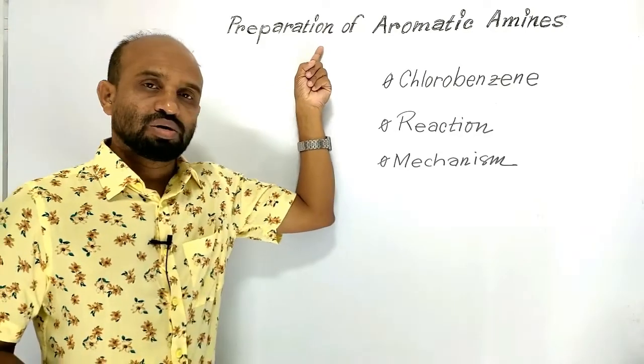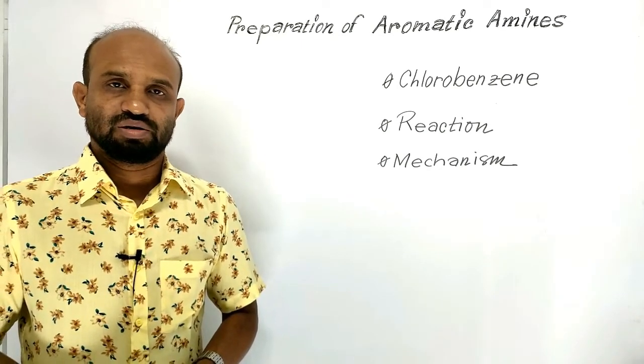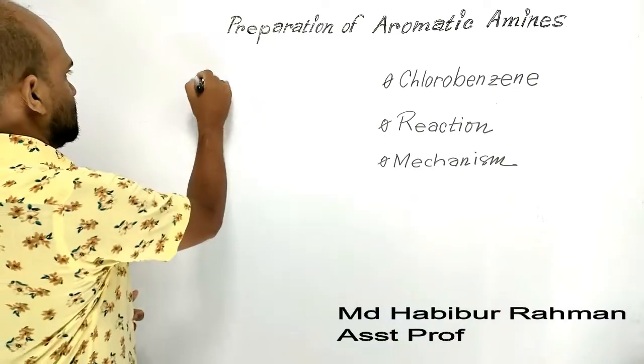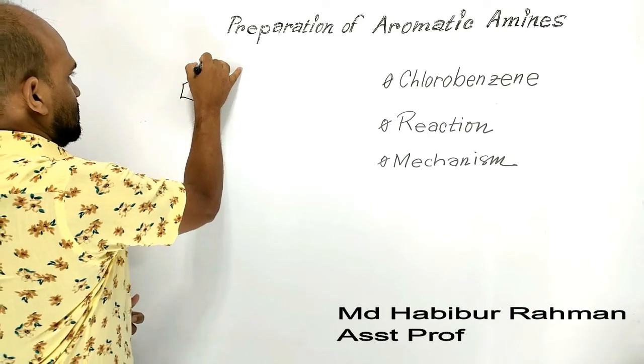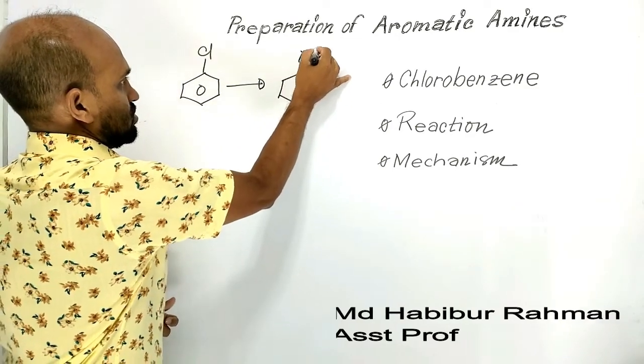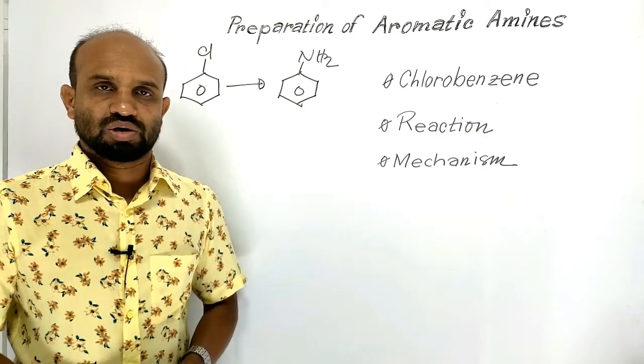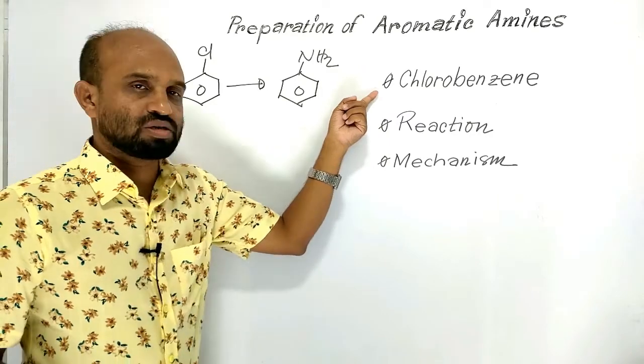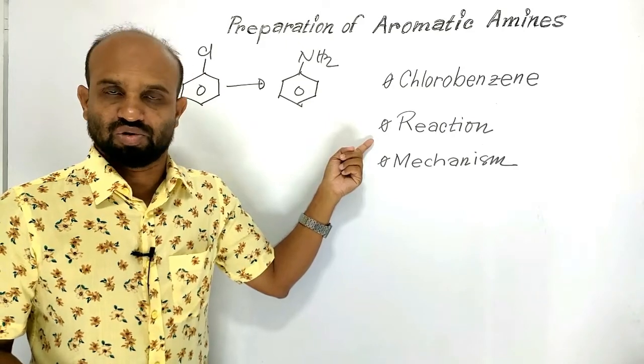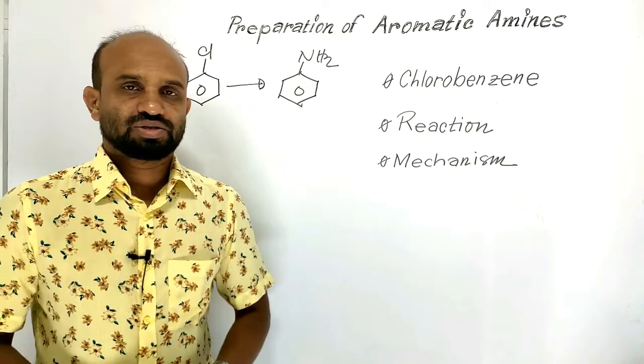The general method of preparation of aromatic amines. In this lesson, aromatic amine, that means aniline, will be prepared from chlorobenzene. We are going to learn the physical state of chlorobenzene, the reaction to produce aniline from chlorobenzene, and then the mechanism of the reaction. So let's get started.